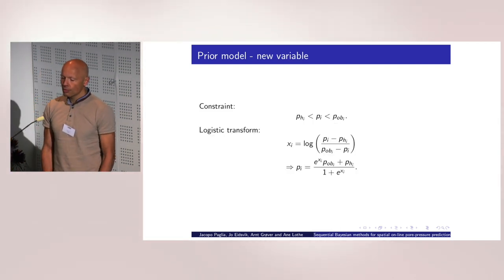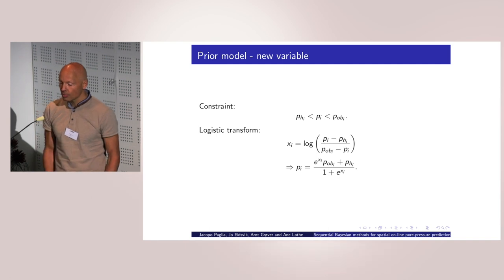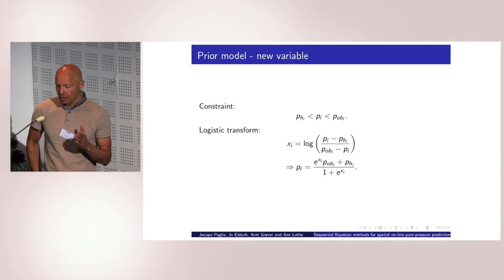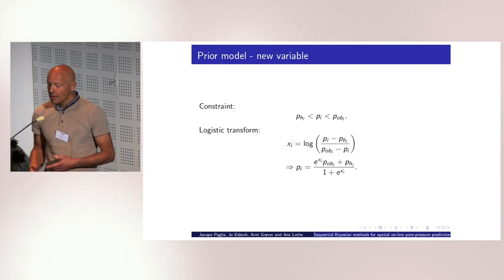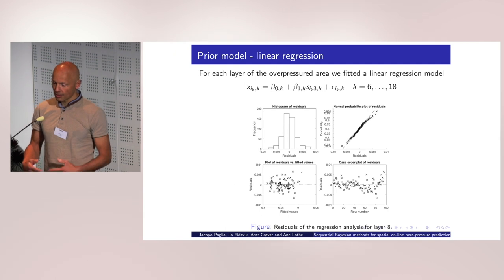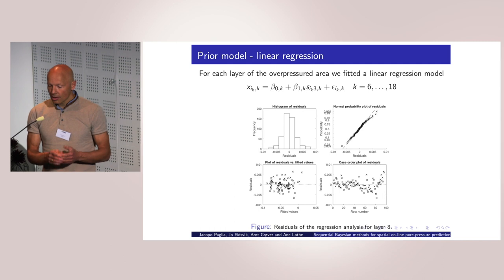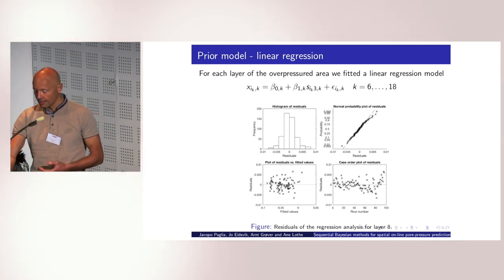So the first thing we do is to transform pore pressure to a variable that's on the real line. Because then we can use Gaussian distributions and it's easier to optimize and it's easier to do computations. So we constrain pore pressure to be between the hydrostatic pressure and the overburden stress, and then this variable X is on the real line. And then within each layer we do regression analysis to make the best out of these geological models. So we fit a linear model in each layer as a function of depth. And that gives us a trend and the data do not follow this trend exactly, but we can look at the residuals to look at the variability and the correlation in the data.